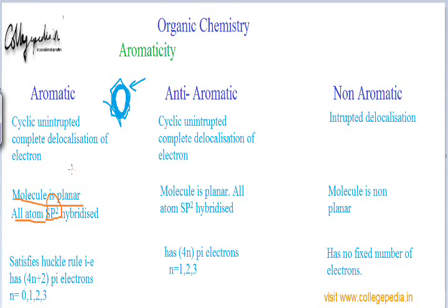The next criterion is that, apart from being planar, the molecule must also satisfy Hückel's rule. Hückel was a scientist who gave the rule that the molecule must have 4n + 2 pi electrons, where n is a whole number (0, 1, 2, 3, etc.). Pi electrons are those electrons which can participate in resonance — lone pairs, negative charges, and electrons in pi bonds. So apart from being planar, the molecule must have 4n + 2 pi electrons in the ring.